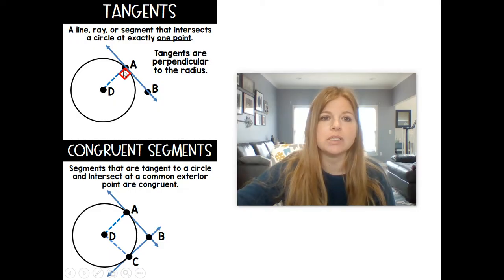So this tangent is perpendicular to my radius DA. And I would be able to say that segment DA is perpendicular to line AB. And again, line AB is the tangent.